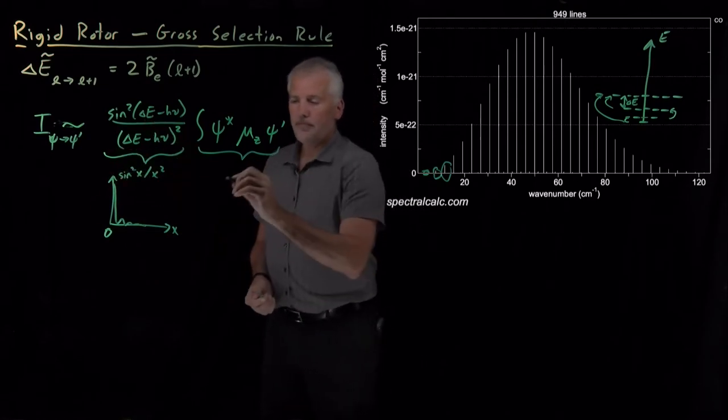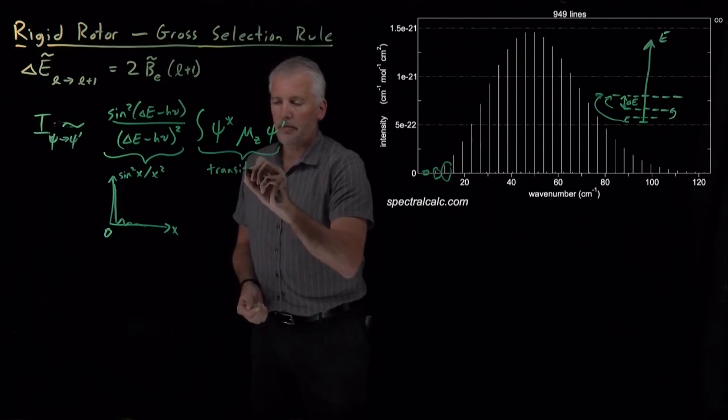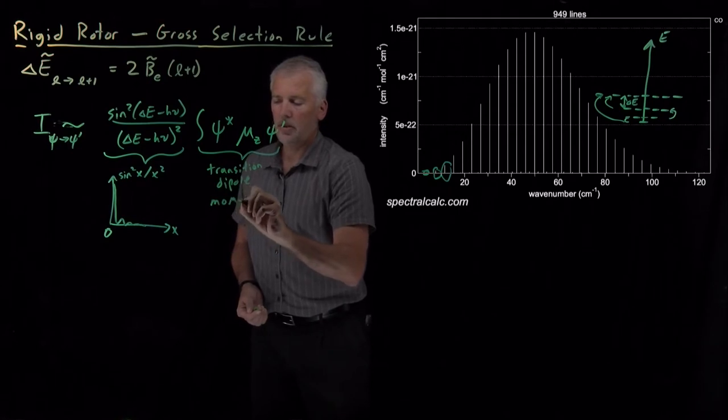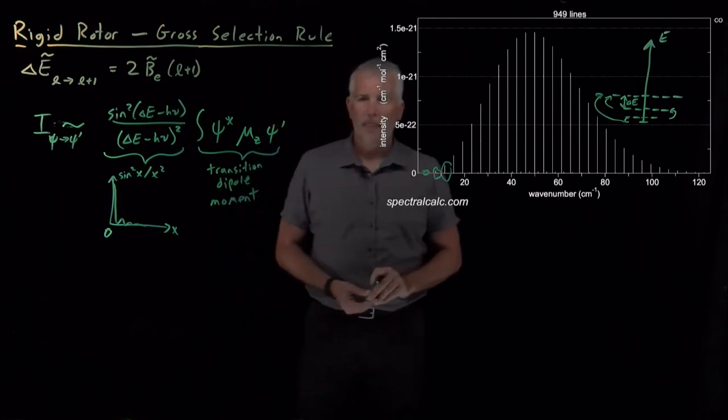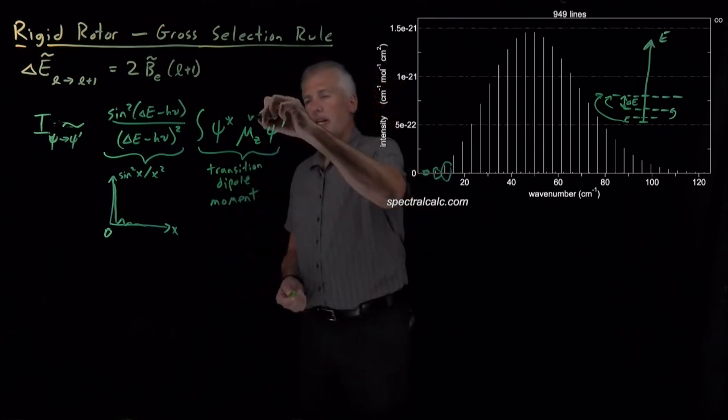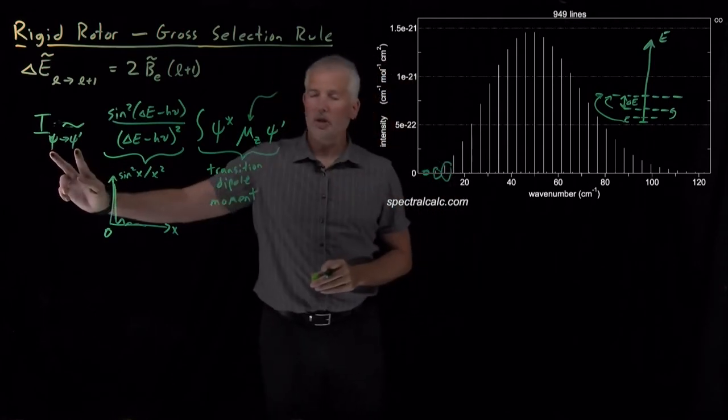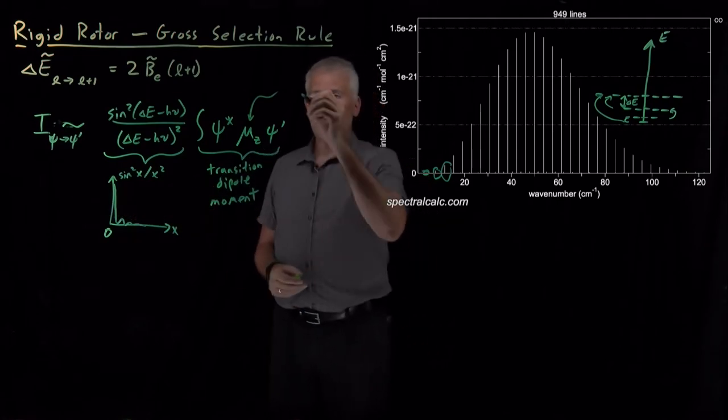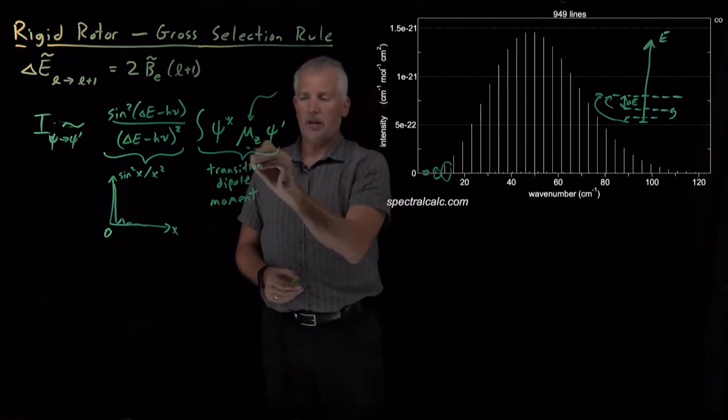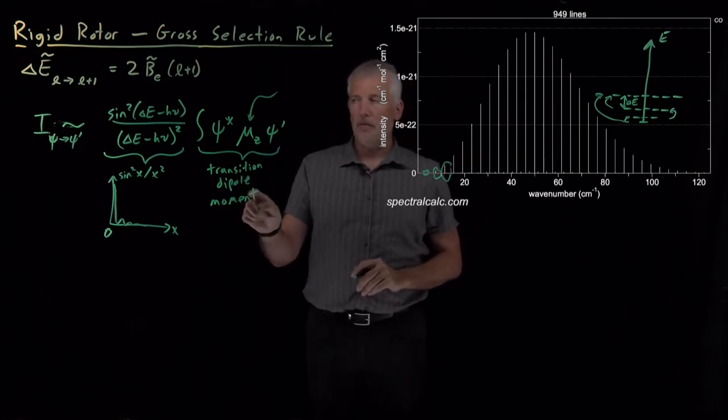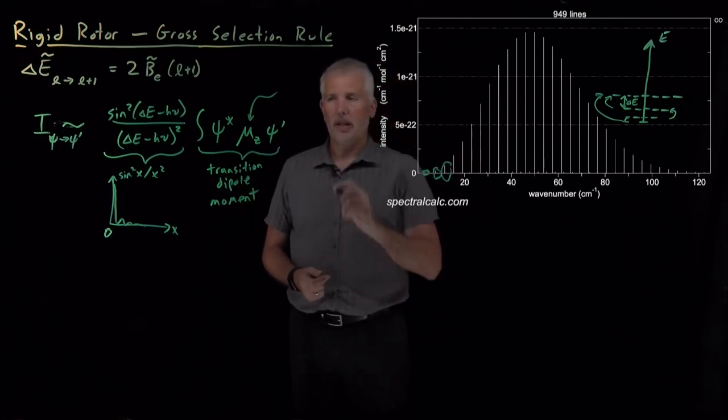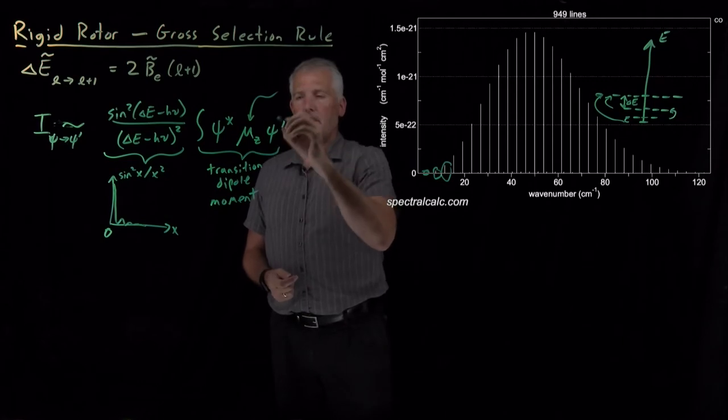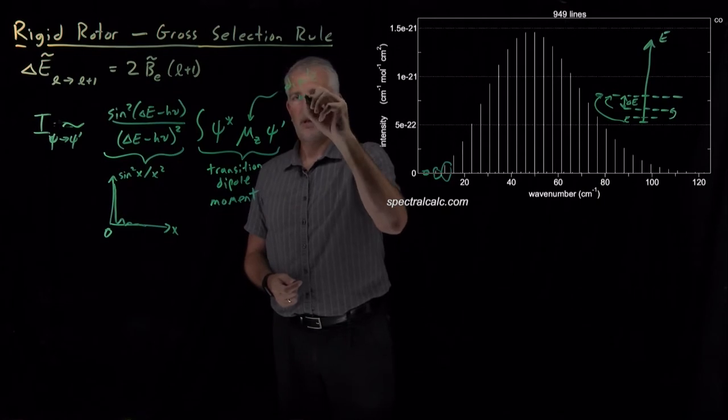This second term, we'll go ahead and give this one a name because we'll be talking about it a fair amount. This is called the transition dipole moment, and the reason for that name, transition, is because we're talking about this transition between state psi and state psi prime. The dipole moment is because we need to understand the dipole moment of the molecule that is absorbing the light.